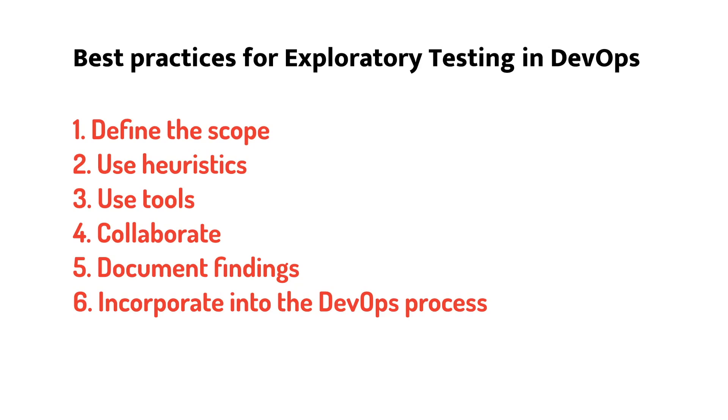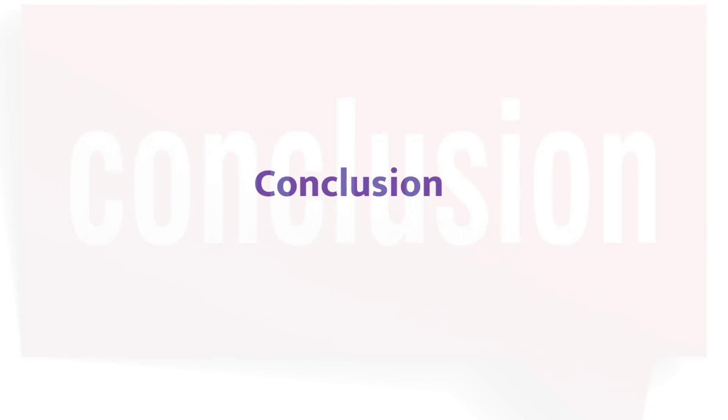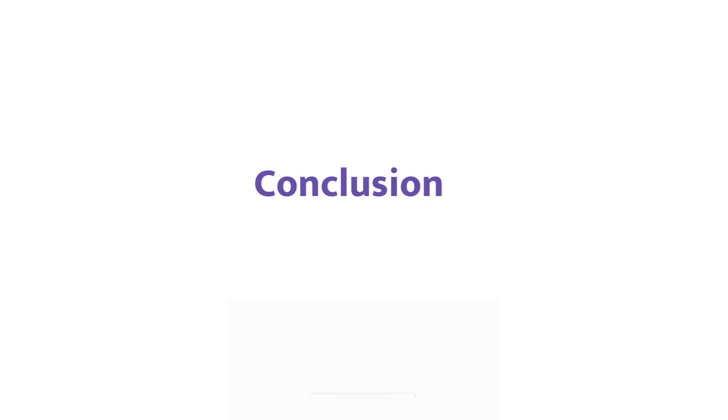Incorporate into the DevOps process: Exploratory testing should be incorporated into the DevOps process to ensure that it is integrated with the development and delivery of the software. This can include integrating exploratory testing with continuous testing, automation, and root cause analysis. Exploratory testing is a valuable technique in DevOps to improve software quality. Best practices include defining the scope, using heuristics, collaborating with the team, documenting findings, and incorporating it into the DevOps process. By following these best practices, testers can identify defects, performance bottlenecks, compatibility issues, usability issues, and security vulnerabilities early in the development cycle, helping to reduce overall cost and improve customer satisfaction.